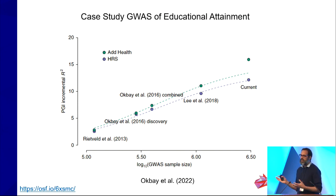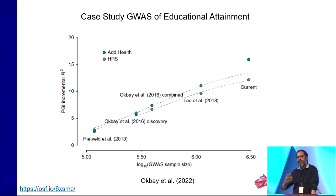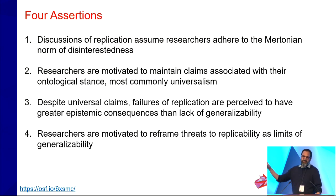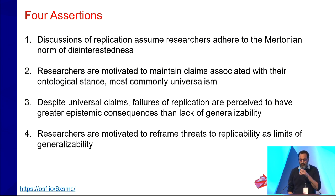This is one case study from GWAS, but we see this all over the place in social science research: in the face of evidence of lack of generalizability, universal claims just keep moving forward. There's a strong motivation to maintain these universal claims because generalizability is not seen as particularly important.